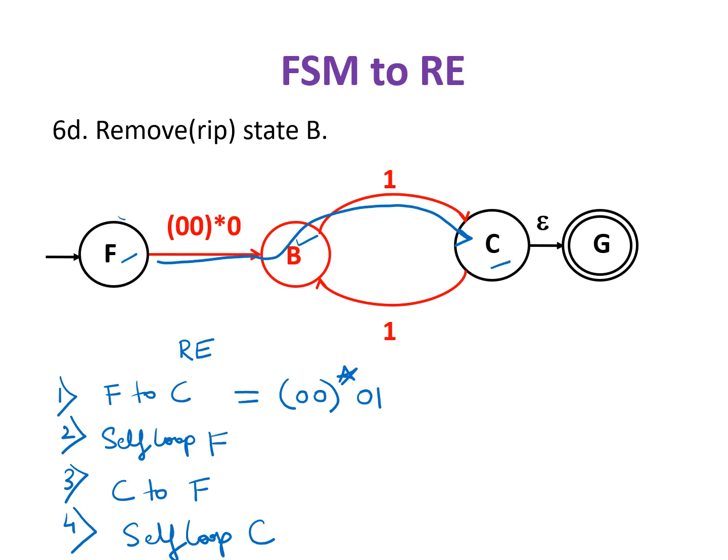Next, self loop to F. There is no self loop here to F. So we don't have any transition for it. Next, C to F. From C we have a transition to B, but from B we don't have any transition to F. So there is no transition from C to F. Next, self loop to C. Is it there through B? Yes, you can see here. 1 to B, again a transition from B to C with 1. So self loop through B to C is 11, represented as (11)*.